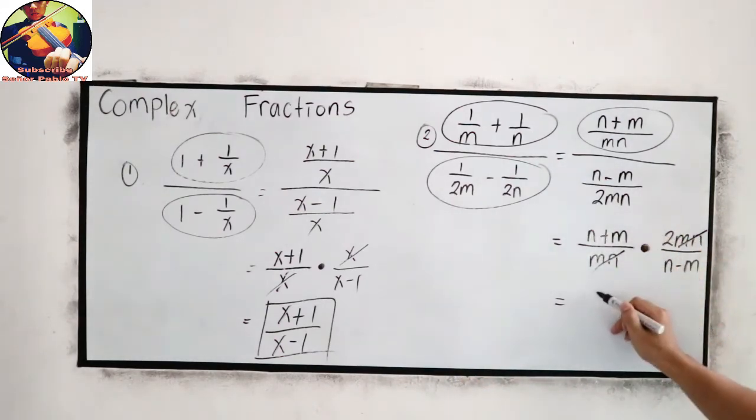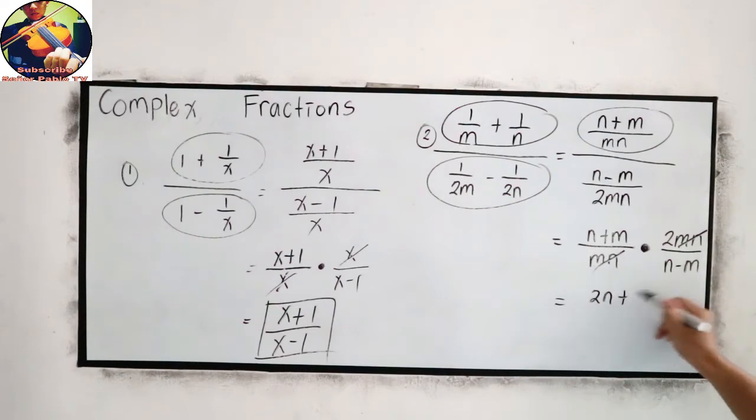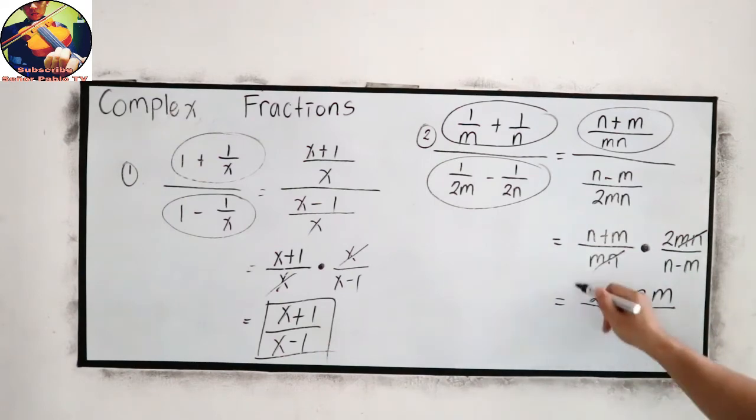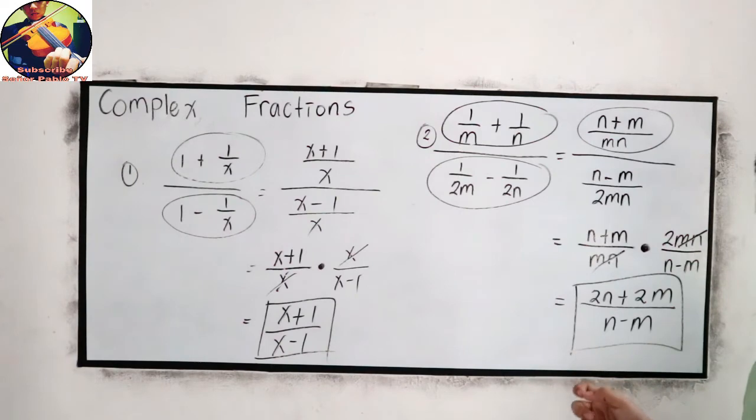answer is 2 times N, 2N plus 2 times M, 2M all over N minus M. This will be our simplest form.